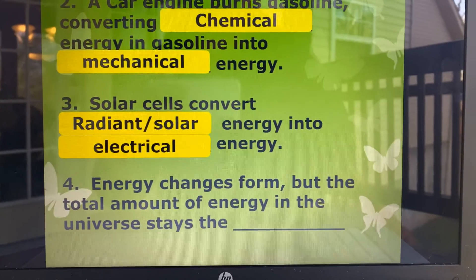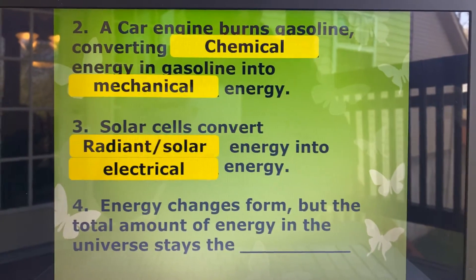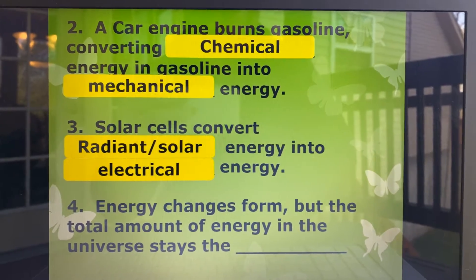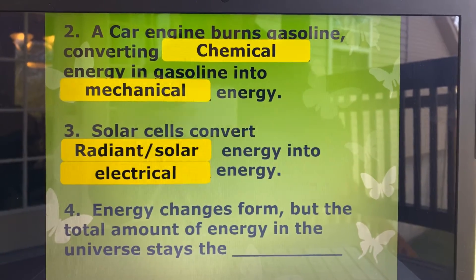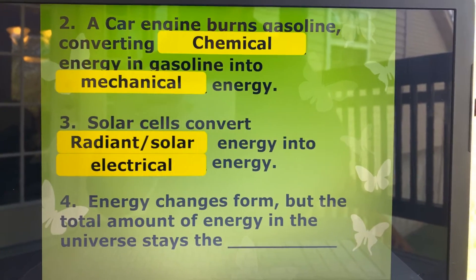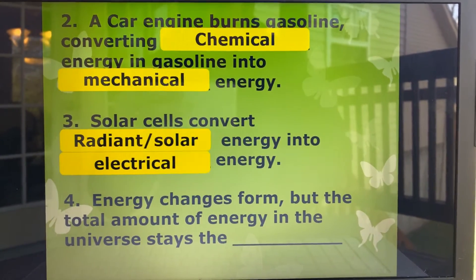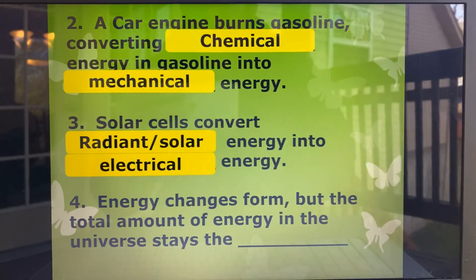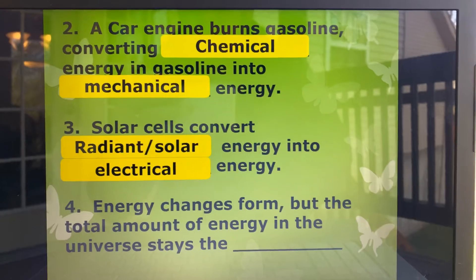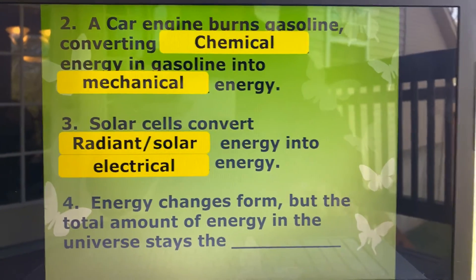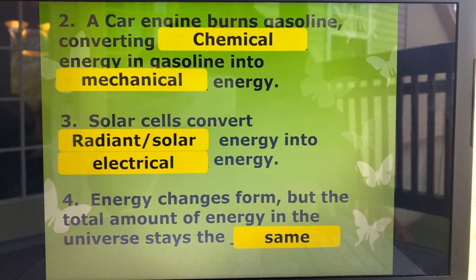Number four, and if you were listening, this is the last one of the day: energy changes form, but the total amount of energy in the universe stays the blank. This takes us back to number one — the law of conservation of energy says energy cannot be created or destroyed, it's only transferred from one thing to another. So energy changes form, but the total amount of energy in the universe stays the same.